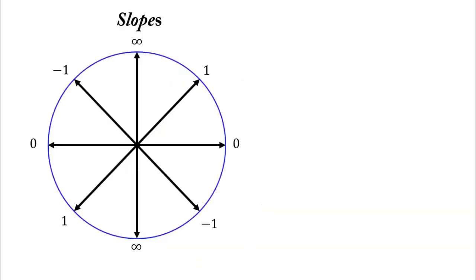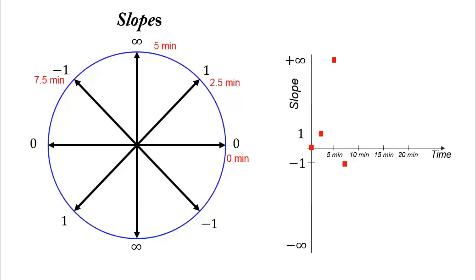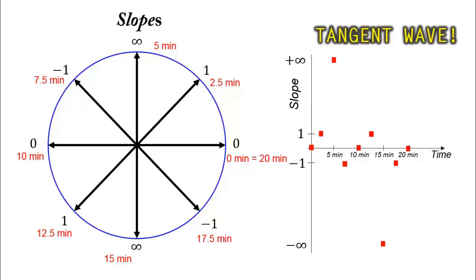Now let's plot these slopes on a slope versus time plot. At 0 minutes, 2.5, 5, 7.5, 10 minutes, 12.5, 15, 17.5, and back to 20. Here you go. This is a tangent wave. So a tangent wave is simply slopes plotted with time as the wheel rotates.